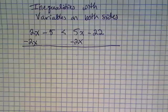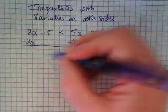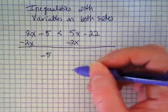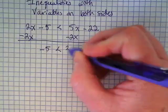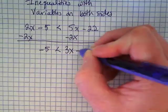What does that leave us with on the left side of the inequality? Negative 5 is less than 3x minus 22.